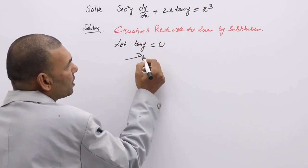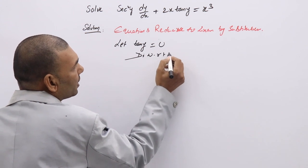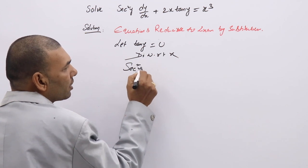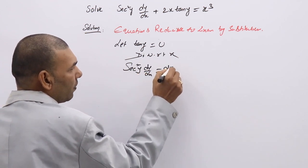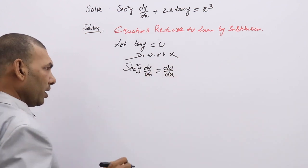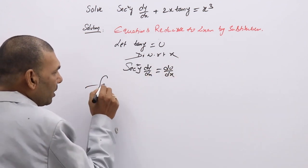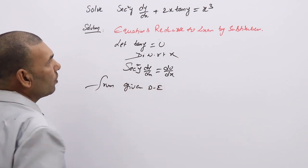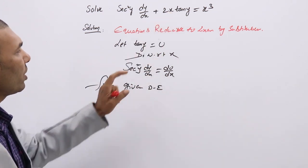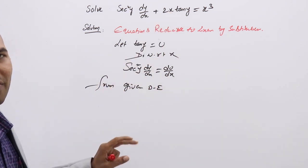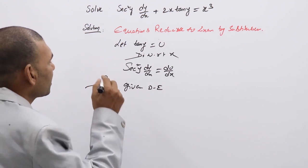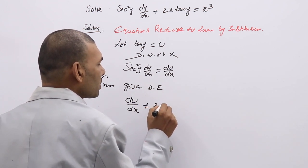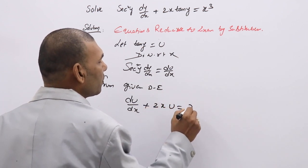Then what happens? If you differentiate with respect to x, differentiation of tan y gives sec²y (dy/dx) = du/dx. From the given differential equation, we can replace tan y by u and sec²y (dy/dx) by du/dx. So what you will get is: du/dx + 2xu = x³.